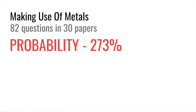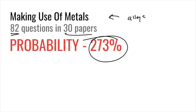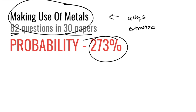Making use of metals has 82 questions in 30 papers — a 273% probability, meaning nearly three questions per paper. Topics include alloys (like brass from copper and zinc), extractions of metals such as iron via the blast furnace, zinc blending, the contact process, and electrolysis of aluminium. You may need to write half ionic equations for aluminium, stating what's at the anode and cathode.